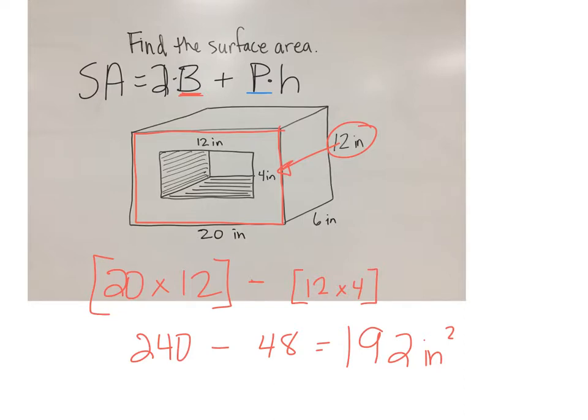For the perimeter, if we were to drive around this rectangle, we would have 20 plus 12 plus 20 plus 12, which is 64. Plus, we also have this inner perimeter because any edge that you can touch is part of your perimeter. We have 12 and 4 and 12 and 4, which is 32 extra inner perimeter units that we have to add.